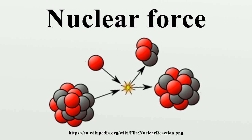The nuclear force is nearly independent of whether the nucleons are neutrons or protons. This property is called charge independence. The force depends on whether the spins of the nucleons are parallel or anti-parallel, and it has a non-central or tensor component. This part of the force does not conserve orbital angular momentum, which is a constant of motion under central forces. The symmetry resulting in the strong force, proposed by Werner Heisenberg, is that protons and neutrons are identical in every respect other than the charge. Neutrons are a tiny bit heavier, but it is an approximate symmetry. Protons and neutrons are therefore viewed as the same particle, but with different isospin quantum number. The strong force is invariant under SU(2) transformations, and isospin and regular spin are related under this SU(2) symmetry group. There are only strong attractions when the total isospin is zero, as is confirmed by experiment.